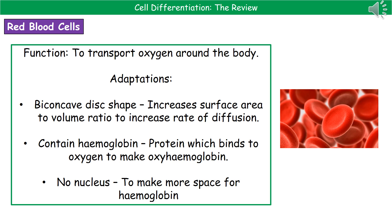The third specialised cell we need to know about are red blood cells, which will come up again in B3. Their function is to transport oxygen around our body. First, their biconcave disc shape — they look kind of like palmer violets or refreshers — increases the surface area to volume ratio, meaning diffusion happens at a faster rate. Second, they contain haemoglobin, a carrier protein that allows oxygen to bind to it, forming oxyhaemoglobin, which transports oxygen through the bloodstream. Finally, they have no nucleus, making as much space as possible to pack in haemoglobin and transport as much oxygen as possible per blood cell.